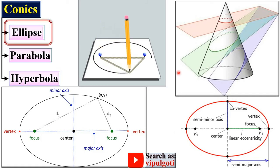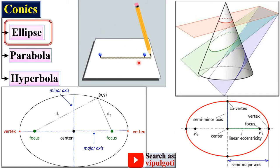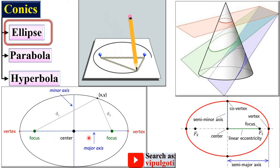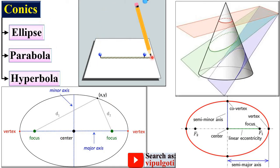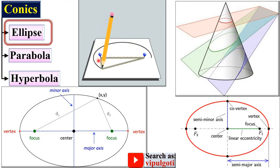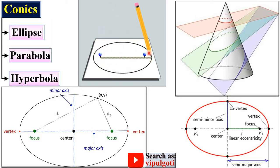When you generate the ellipse, these two are the fixed points, and that is why they are called focus points. The lead of the pencil is called the moving point.